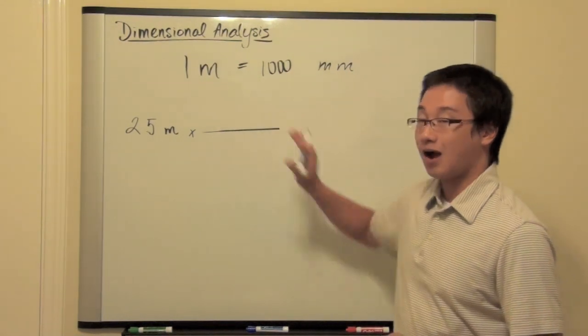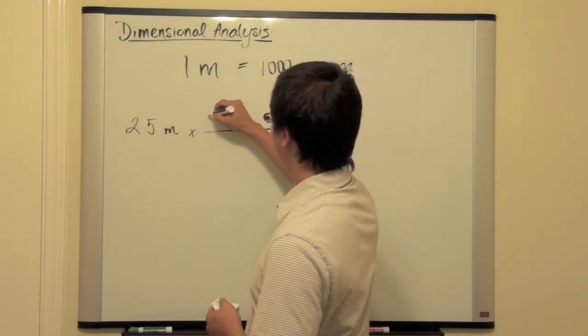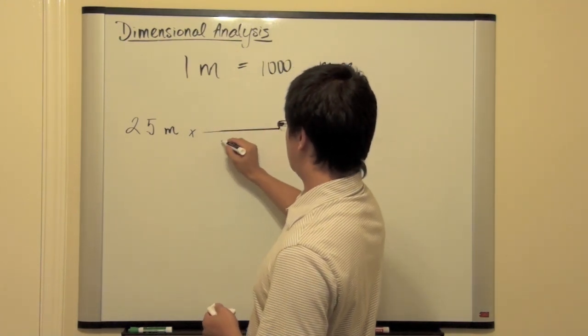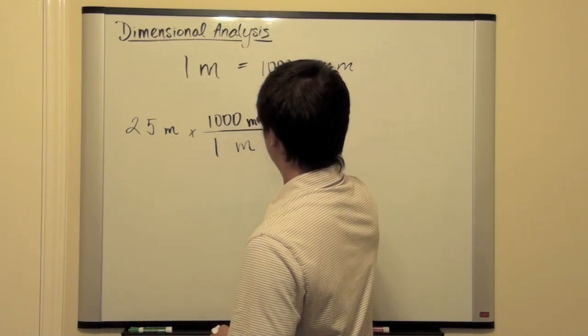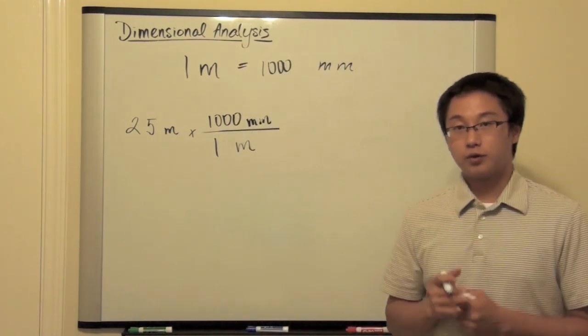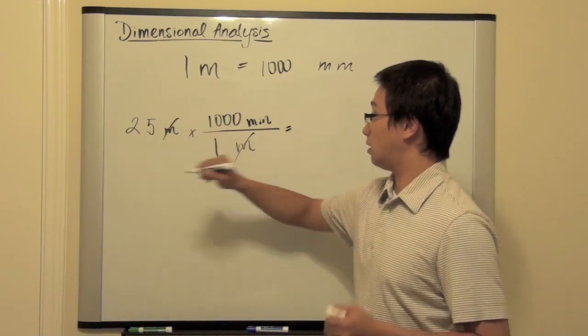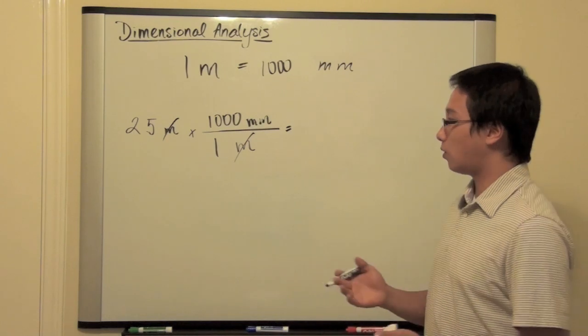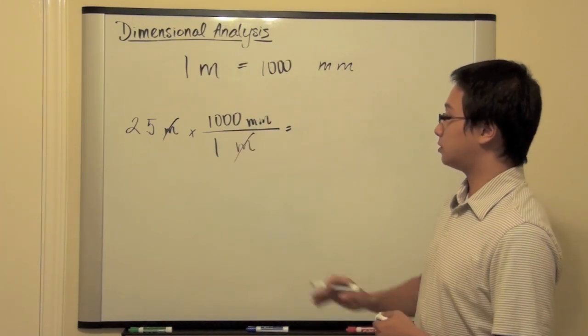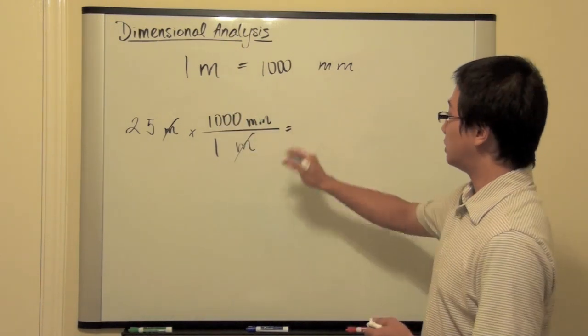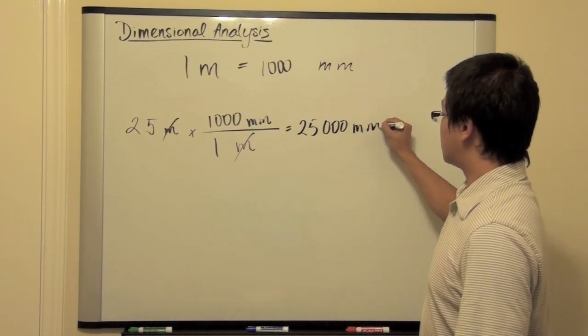And now, I'm going to write this down first, and then I'm going to post some questions for you. So, what I'm going to do is this. Okay. So, this is how you do it. And then, you do some simple math that you have on your middle school or Algebra 1. You cancel out the common terms, meter and meter. They are the same, so you cancel them out. So, you have 25,000 millimeters.